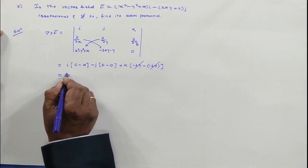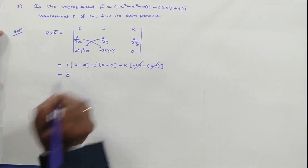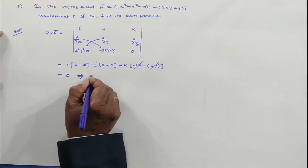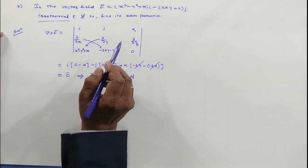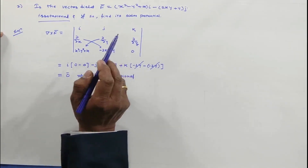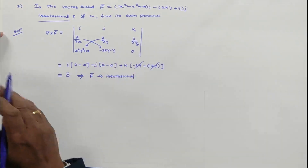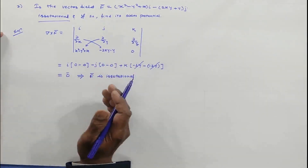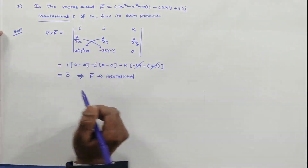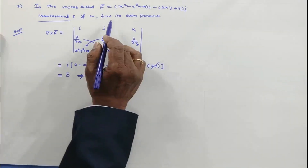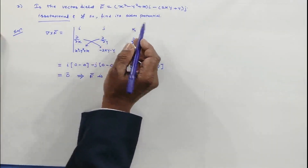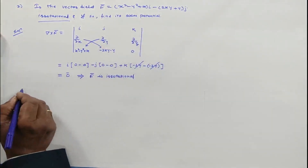The result is 0i + 0j + 0k. Del × F̄ is the zero vector, which implies F̄ is irrotational. We now need to find the associated scalar potential. There are different ways to find the scalar potential associated with an irrotational vector field.